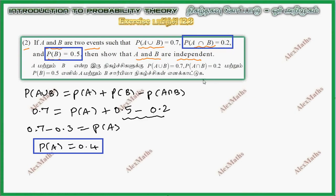if we check this independent, P(A intersection B) equal to P(A) into P(B), this relation is true. P(A intersection B) is 0.2, P(A) is 0.4, P(B) is 0.5.